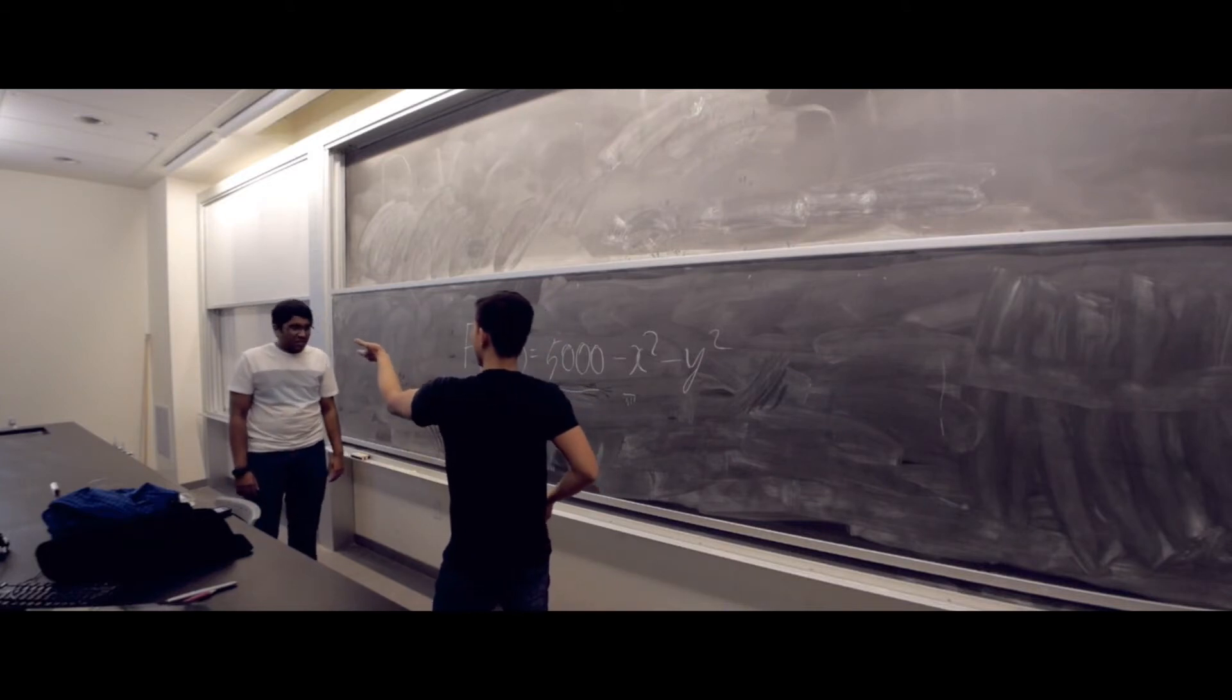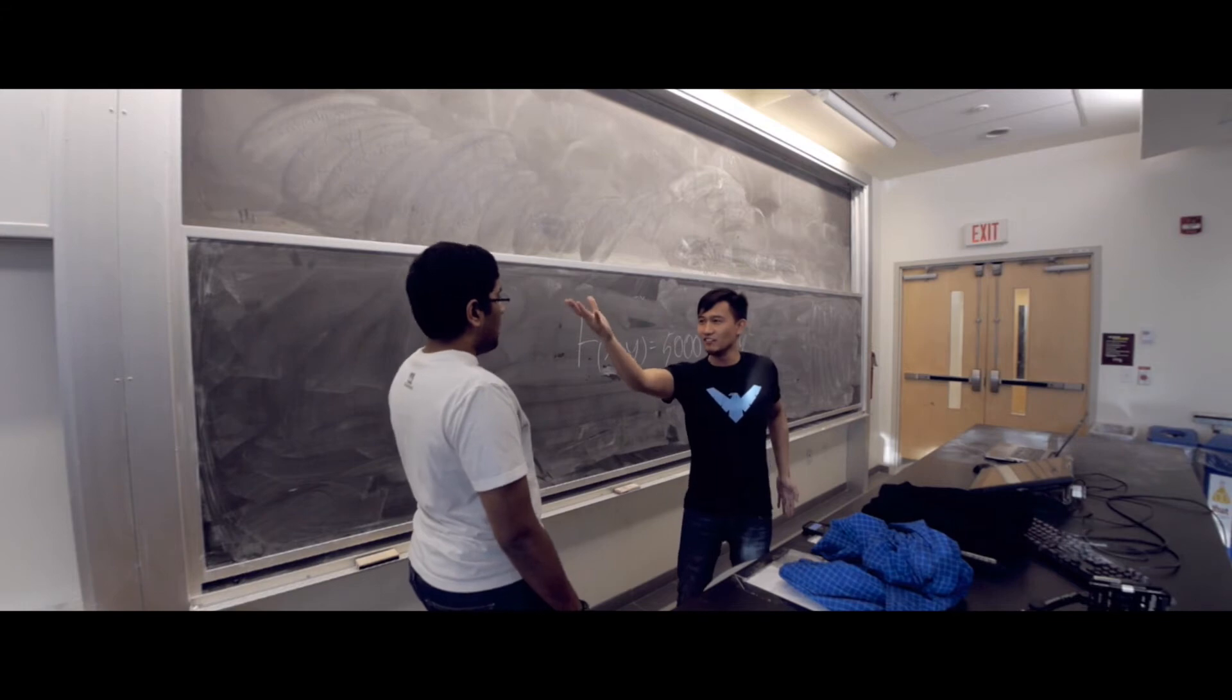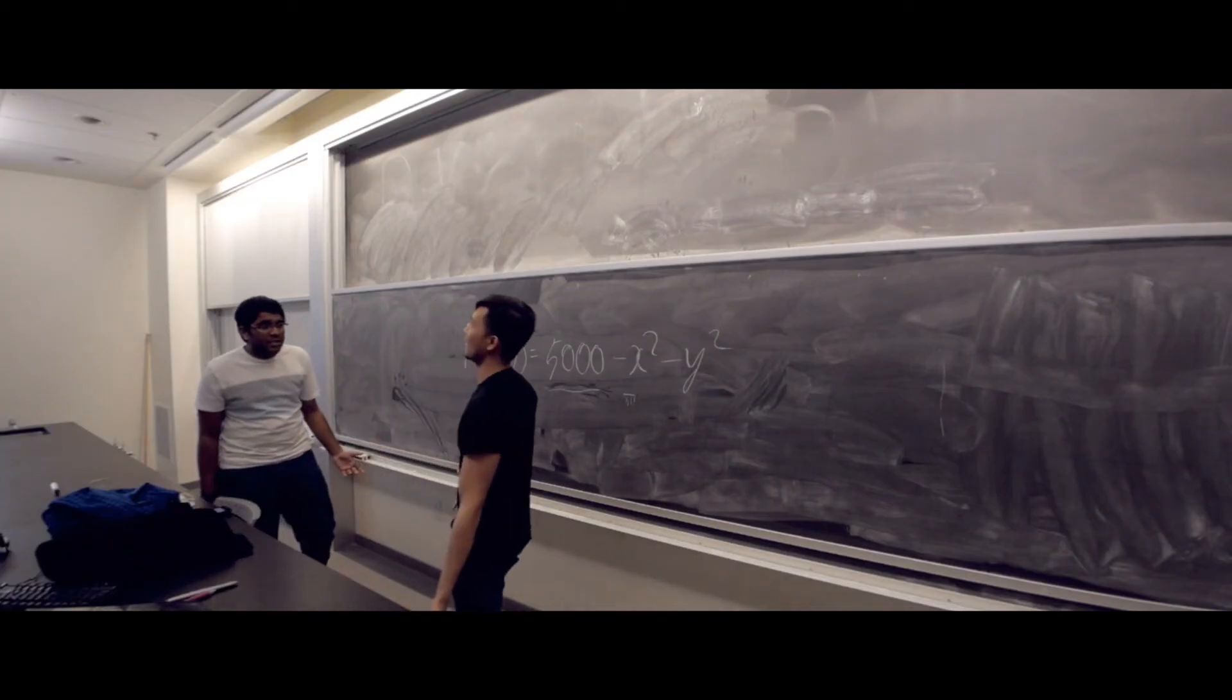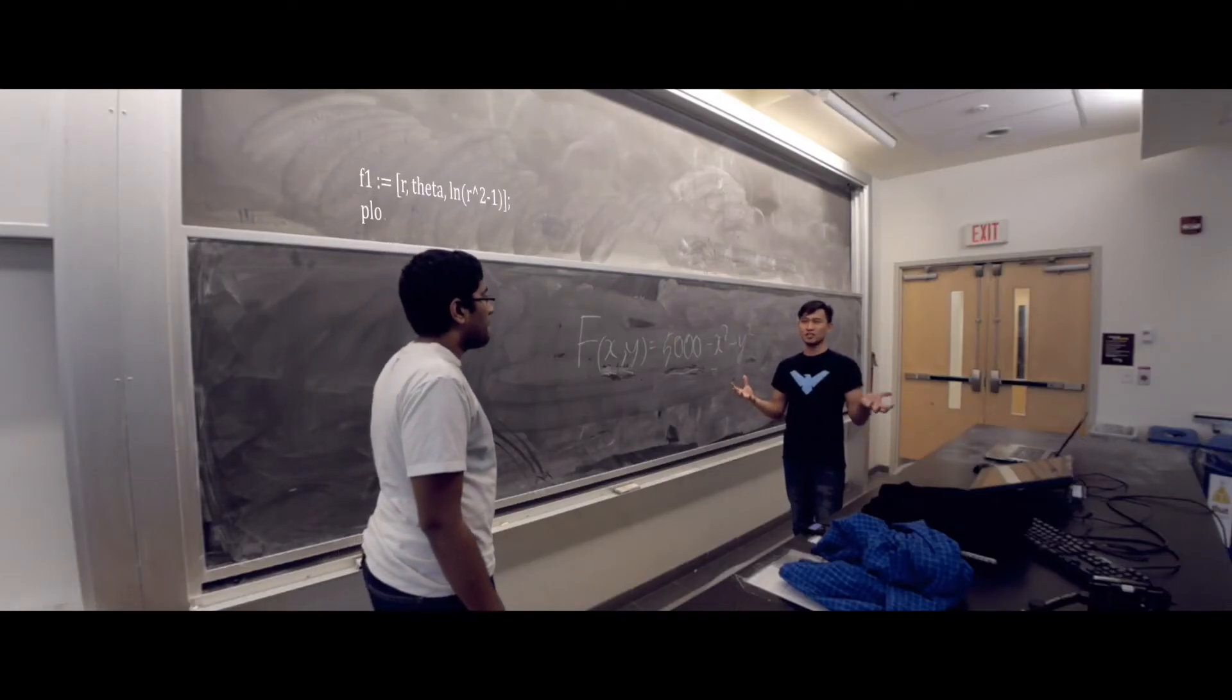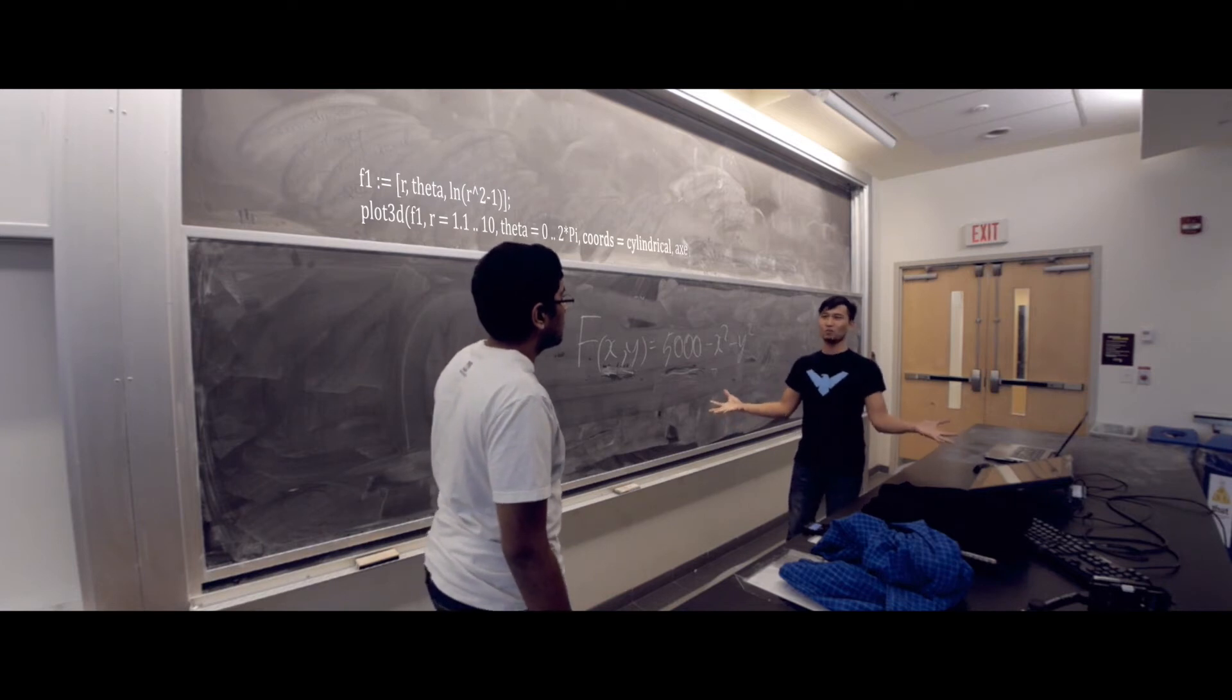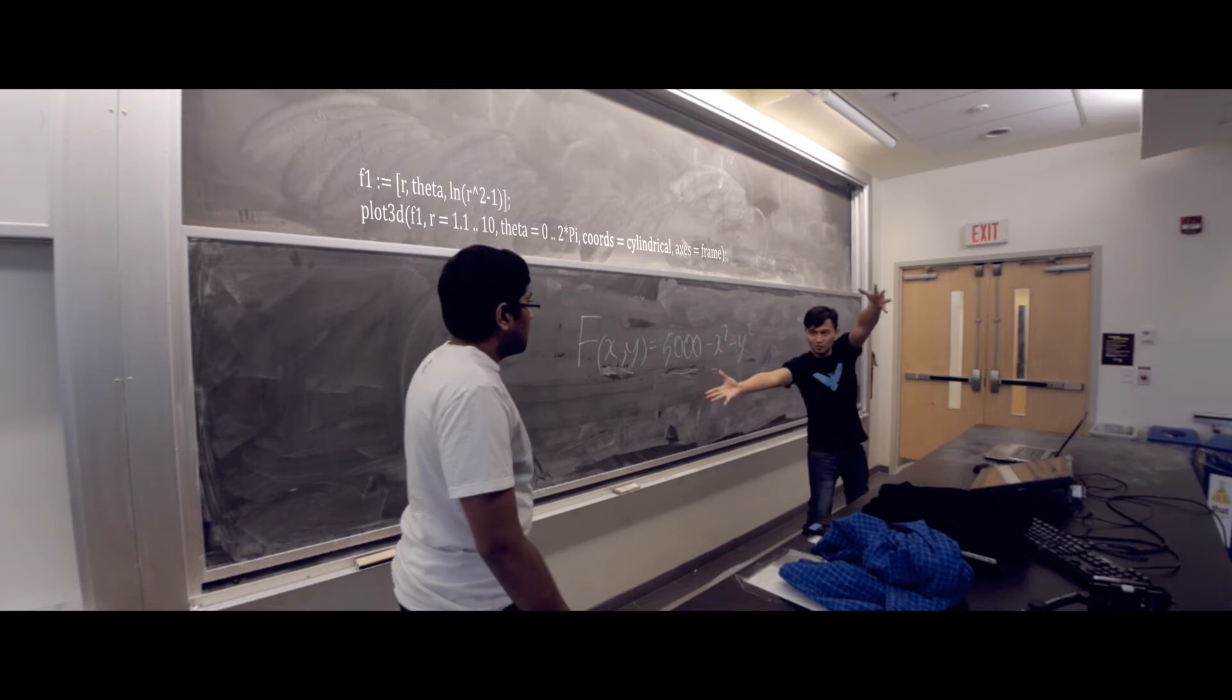Even graphs in different variables other than x and y. Even graphs not in Cartesian coordinates. Even graphs in polar coordinates. No! Not polar coordinates! Are you crazy? By simply adding the coord equals cylindrical to the options of the plot 3D function, Maple can work with polar coordinates with ease. And now I shall suck you into my vortex.